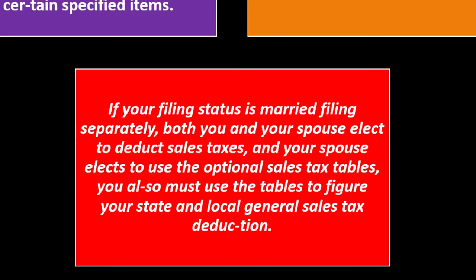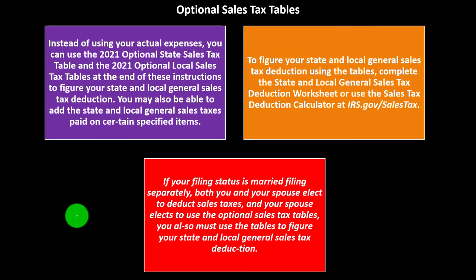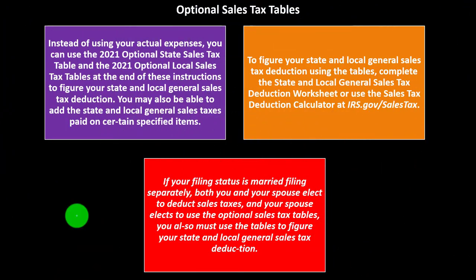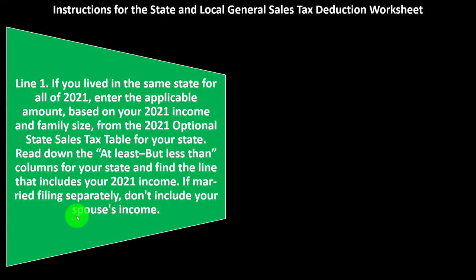If your filing status is married filing separately, both you and your spouse elect to deduct sales taxes, and your spouse elects to use the optional sales tax tables, you also must use the tables to figure your state and local general sales tax deduction. The IRS is going to be skeptical of one spouse taking the tables while the other takes actual sales taxes — they want uniformity to prevent gaming the system.